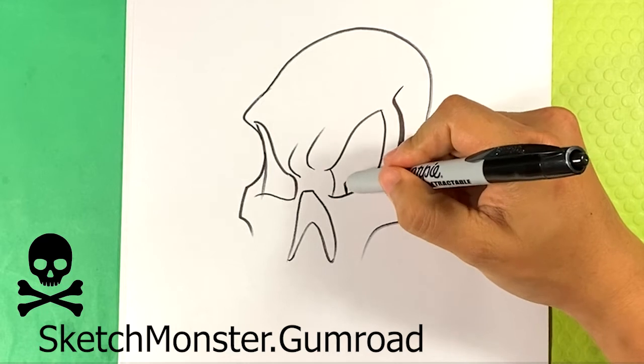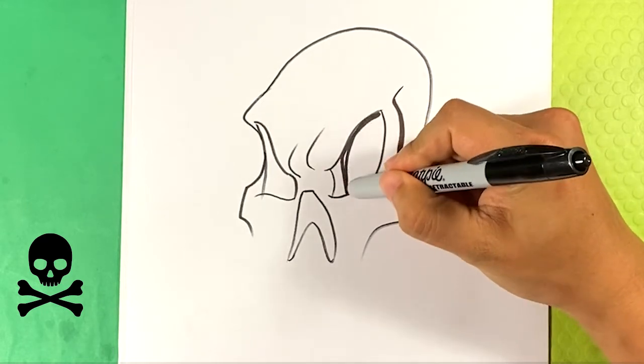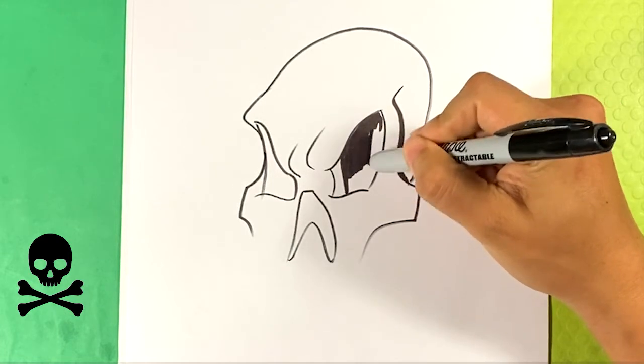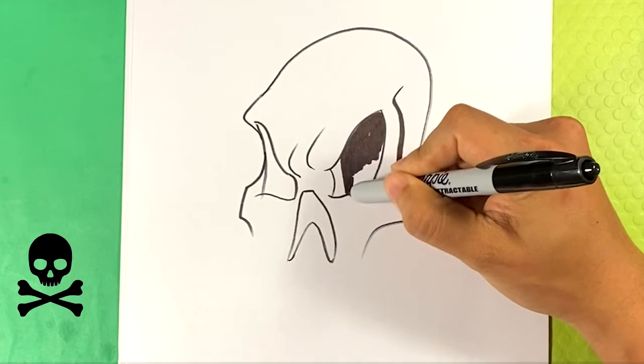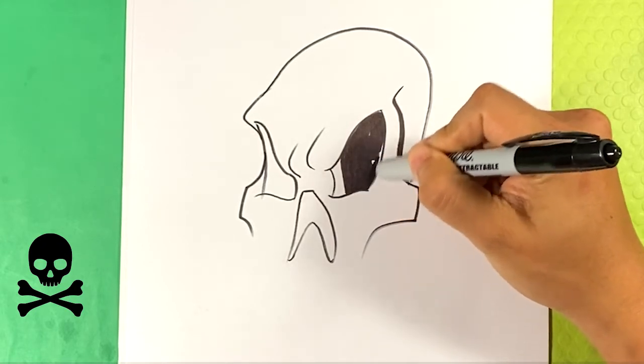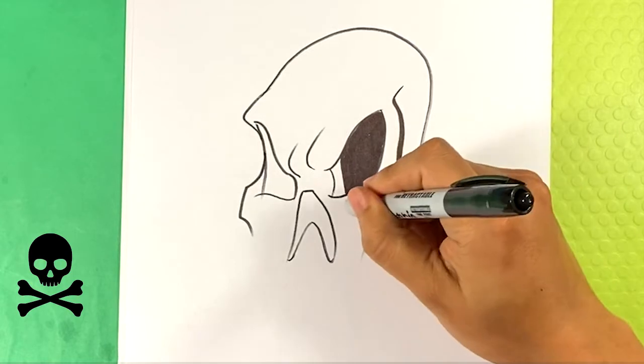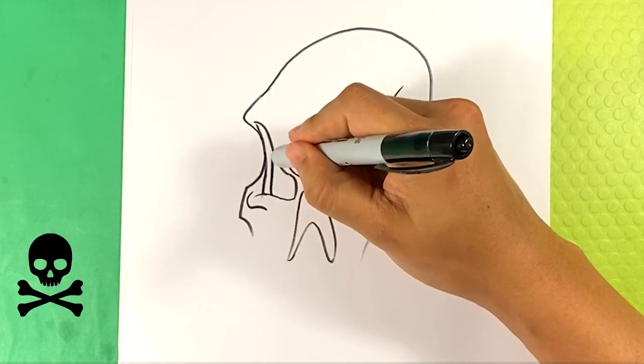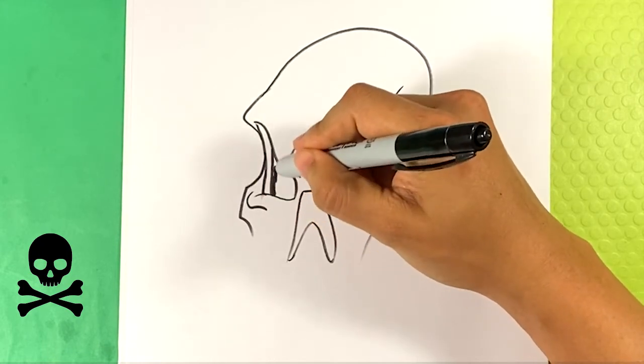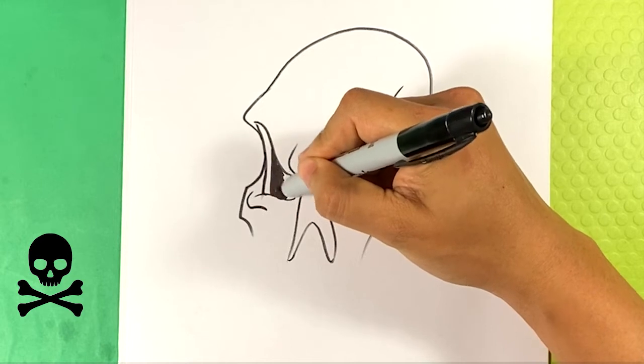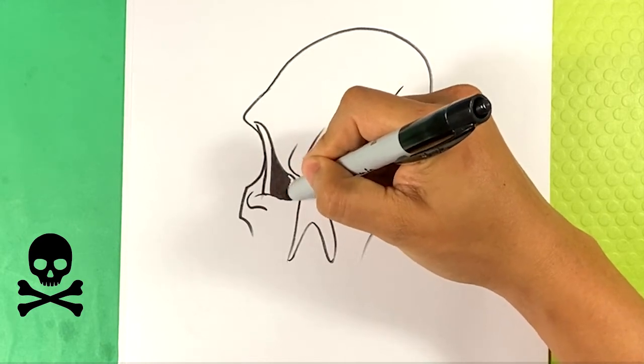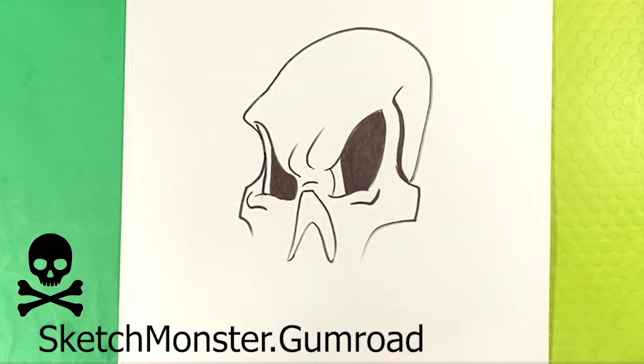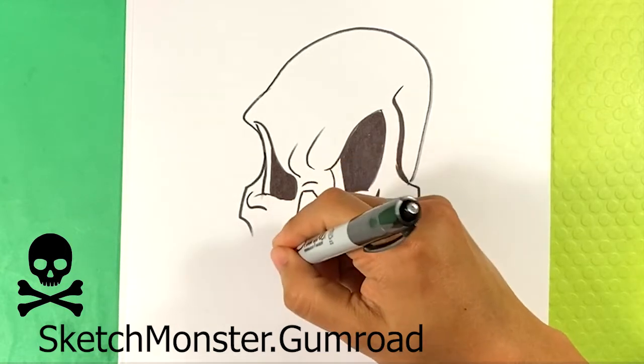Gonna go right here into the eye and I'm gonna kind of fill in most of it, not all of it, but most of it. I'm gonna fill it in to kind of give it obviously like a dark shape right there for the shadow. Curve underneath, curve underneath. Line over here, gonna fill that in. Curve line here, line over here, curve over here.